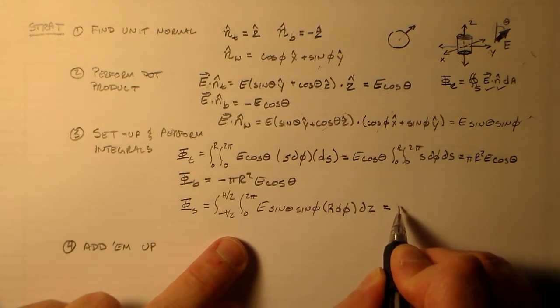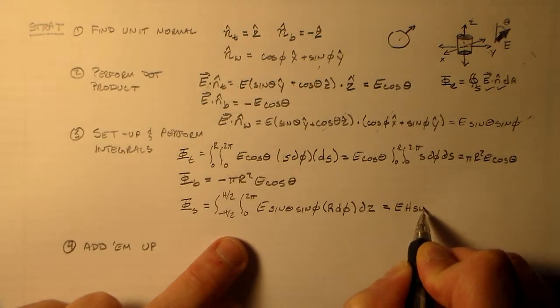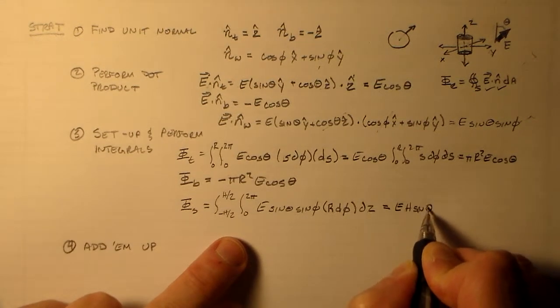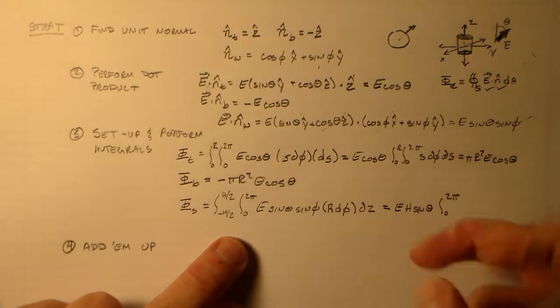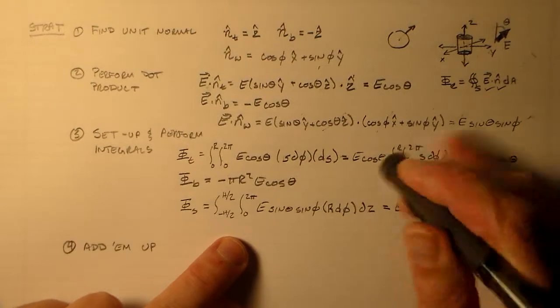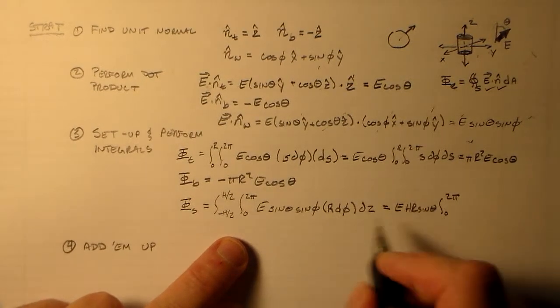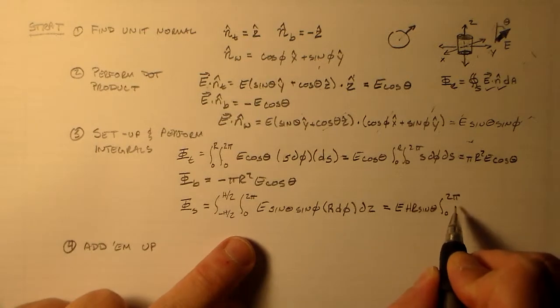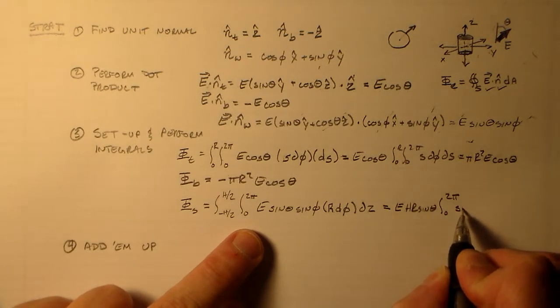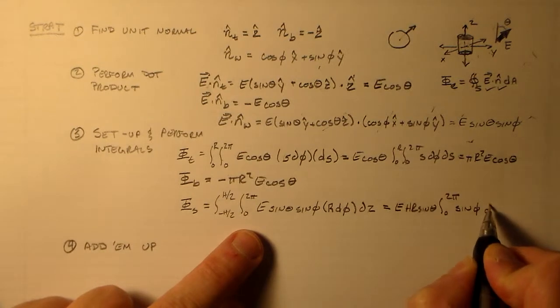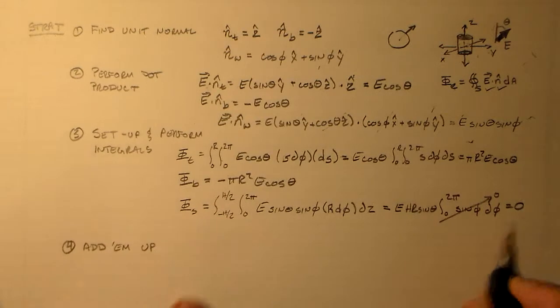Z we can integrate, phi we're not ready to integrate yet. So we have e h sine theta times the integral of zero to two pi, oh, e h r sine theta, which, zero to two pi, sine phi d phi. This is just zero, so we have zero there.